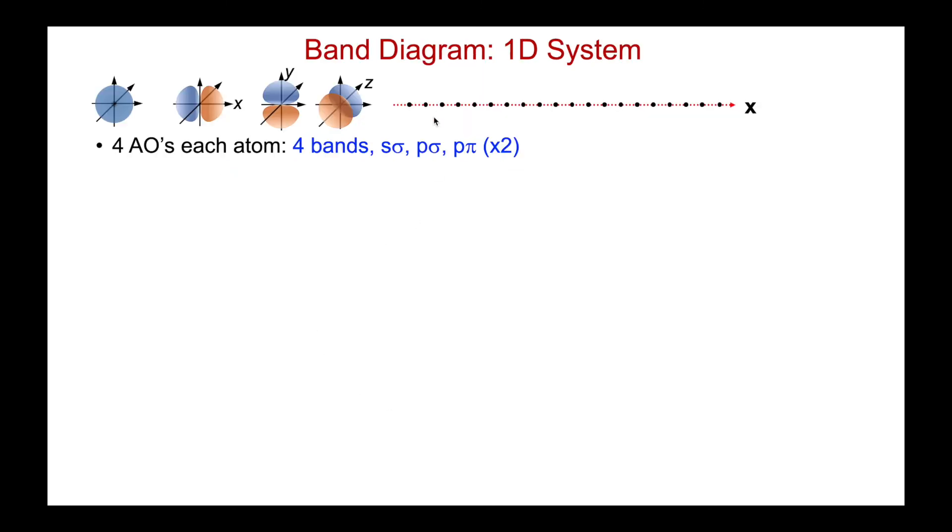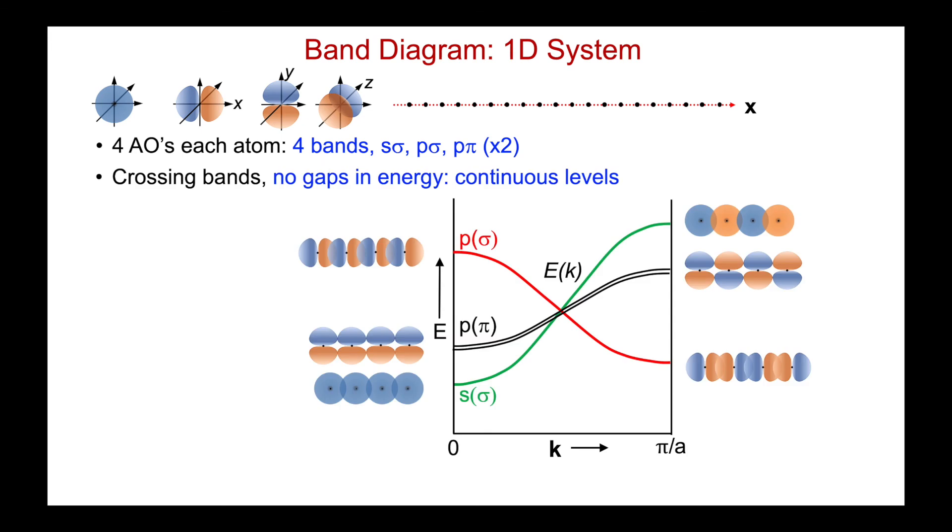So let's pull all that together for our one-dimensional system and diagram. We've seen the s's, sigma interactions. The band runs uphill. We've seen the px sigma. The band runs downhill. And we've seen the two pi interactions from py and pz. And the band runs uphill. So, four atomic orbitals for each atom. We're going to have four bands. Let's plot them all on one diagram. Here I've colorized them just to distinguish the differences. The green is my s-band. k-0 all in phase, k-pi over a all out of phase. Here's my p-sigma. k-0, now all out of phase, highest energy. Pi over a for the px's, all in phase, running downhill. And now here are my doubly degenerate p-pi's. My py and pz derived band running uphill, going from all bonding to all anti-bonding.